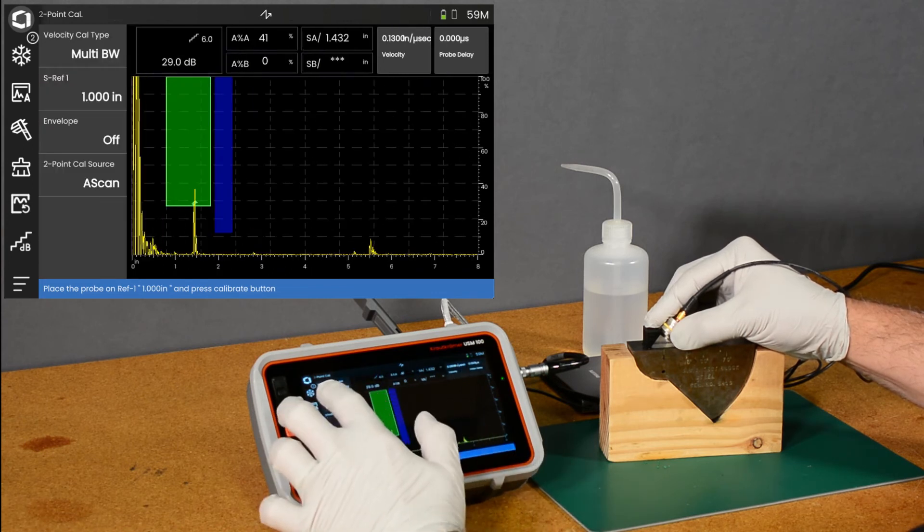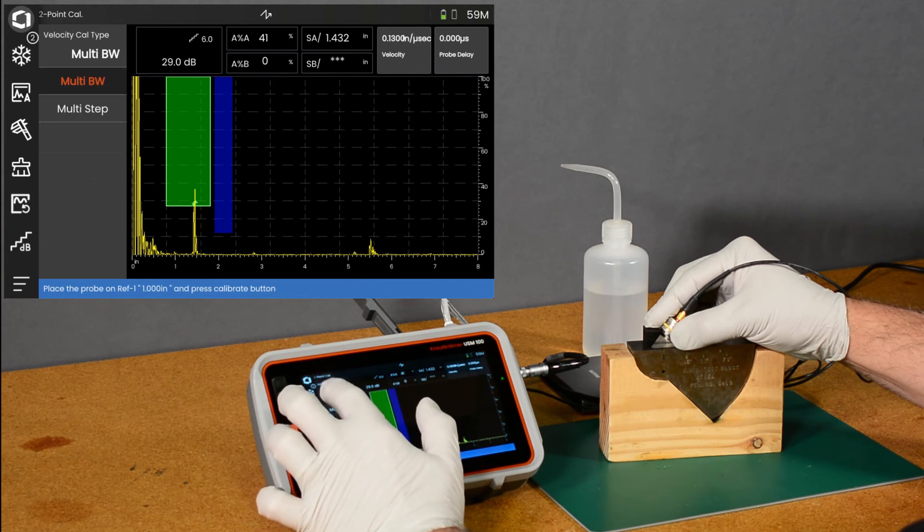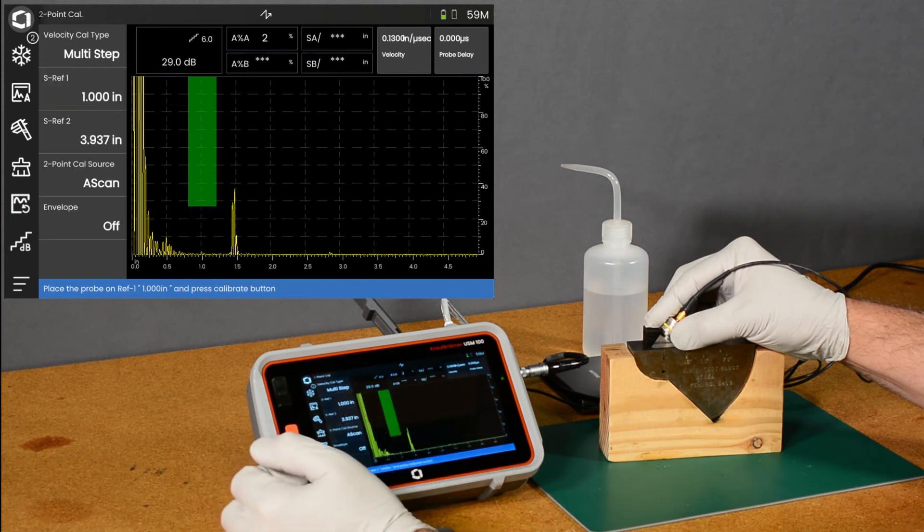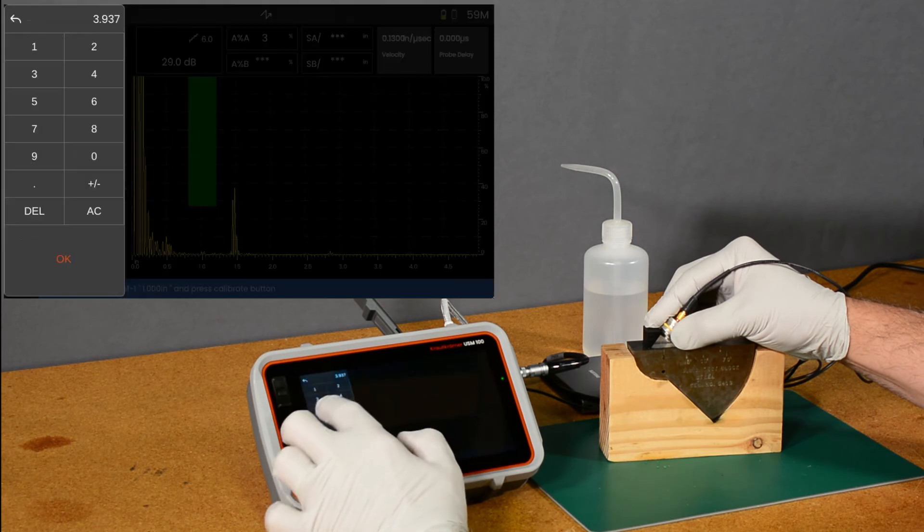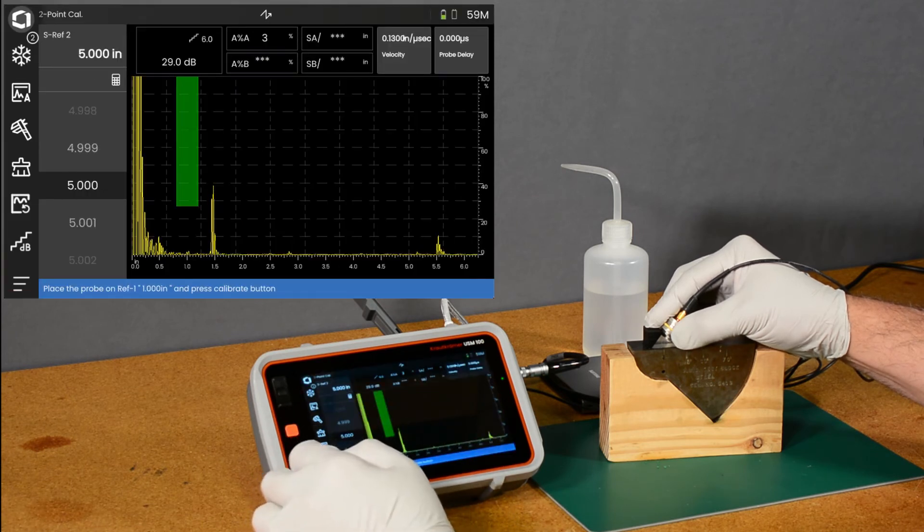We'll swipe out our sidebar and we're going to go to multi-step calibration. And we're going to tell it that we want to have our first reference at an inch. We're going to do our second reference at 5-inches. Okay,